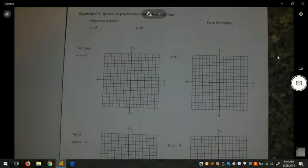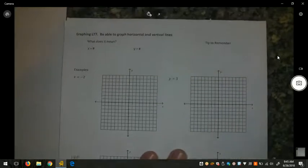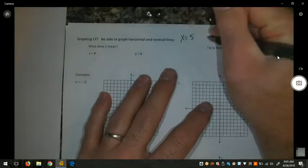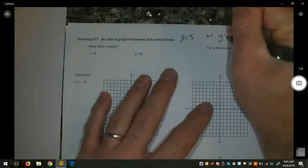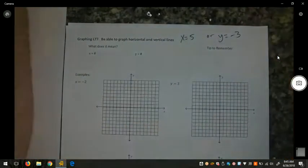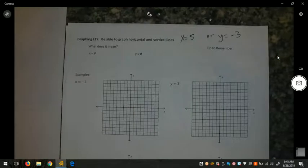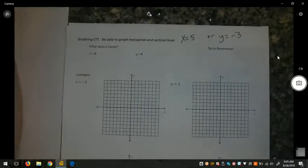But what happens if we have an equation that's not in that form, such as x equals 5 or y equals negative 3? We don't see the slope. In some sense, we don't see the x-intercept or the y-intercept, although you could find one of them for each of these equations.